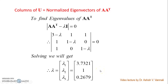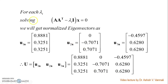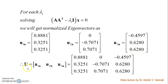For each eigenvalue, solve (AA transpose − λI)x = 0. When you solve and normalize, the first eigenvector u1n is [0.8881, 0.3251, 0.3251]. For the second eigenvalue (λ=1), the normalized eigenvector u2n is [0, −0.7071, 0.7071]. For the third eigenvalue, u3n is [−0.4597, 0.6280, 0.6280]. The matrix U is constructed with u1n, u2n, and u3n as its columns.